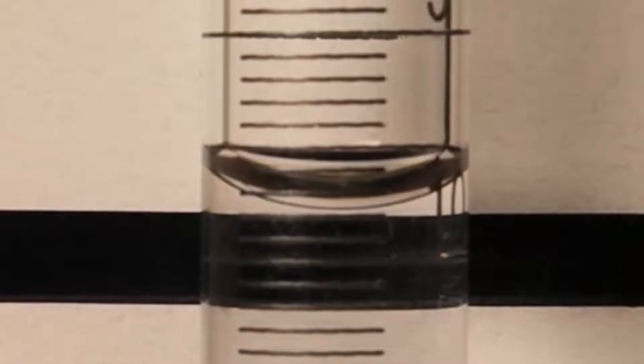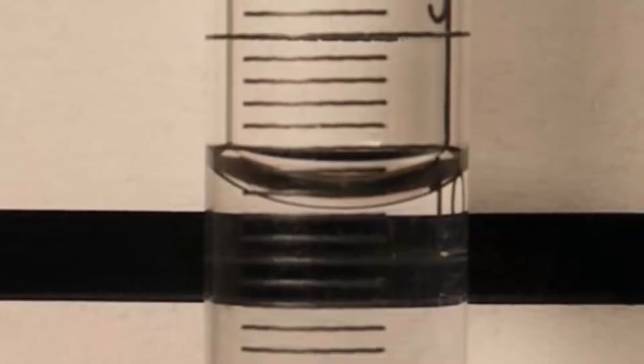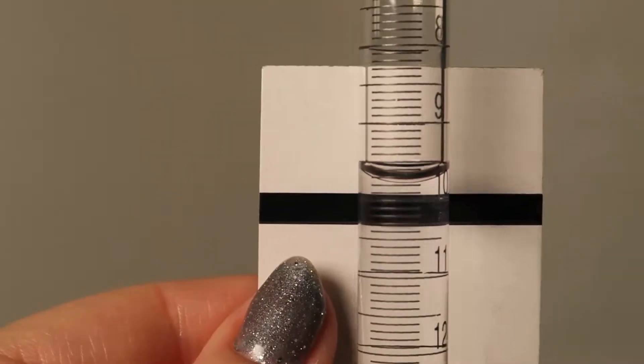You should aim to hold the card approximately one marking below the meniscus. The darkened and sharp curve of the meniscus with the reading card is much easier to take consistent readings from compared to not using the reading card.